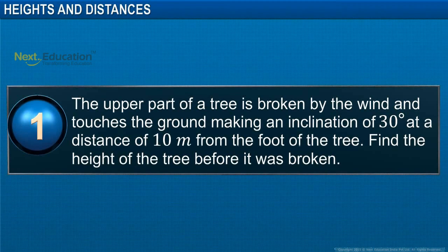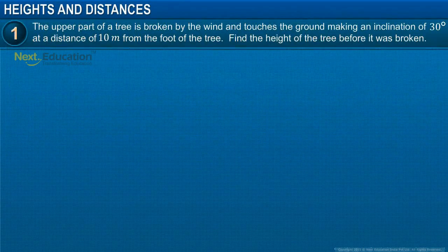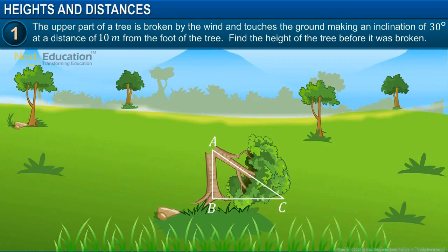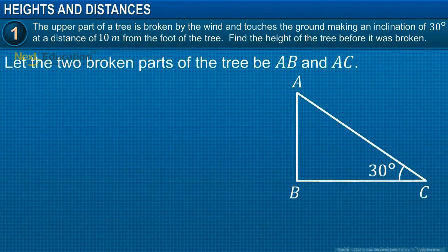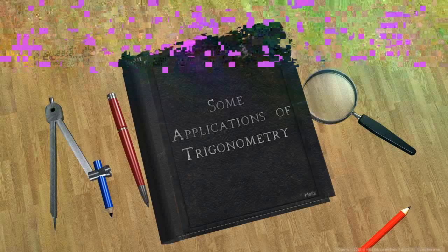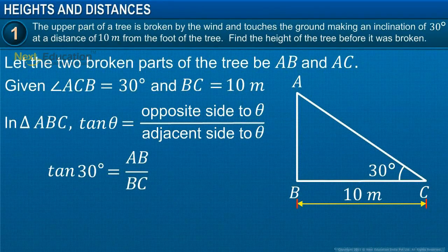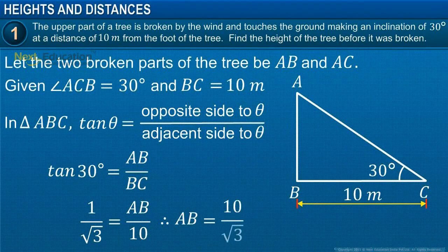The upper part of a tree is broken by the wind and touches the ground, making an inclination of 30 degrees at a distance of 10 meters from the foot of the tree. Find the height of the tree before it was broken. From the figure, let the two broken parts of the tree be AB and AC. Given that the angle of inclination from C is 30 degrees and the distance between the foot of the tree and the broken part touching the ground is 10 meters. In triangle ABC, tan theta is equal to the opposite side to theta divided by the adjacent side to theta. Tan 30 degrees is equal to AB divided by BC. Substituting the values and simplifying, we get AB is equal to 10 upon root 3 meters.